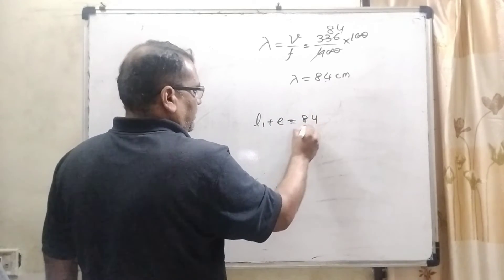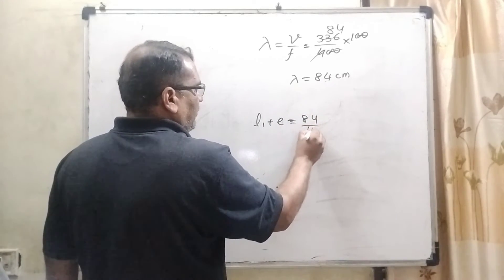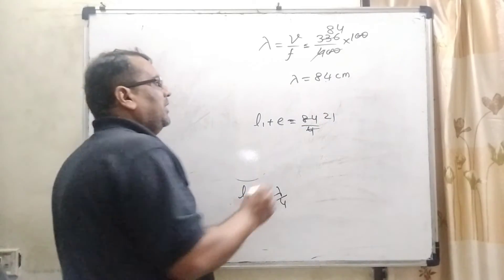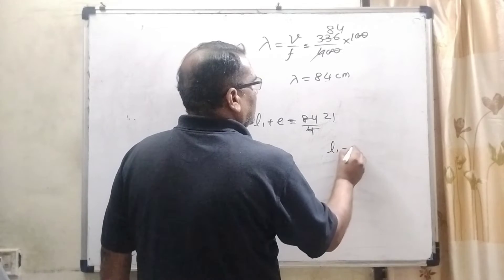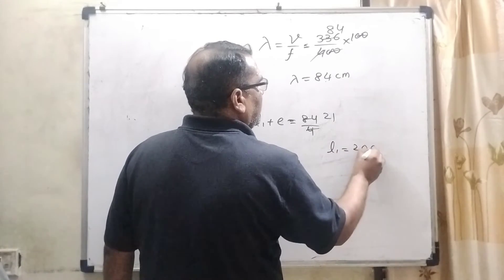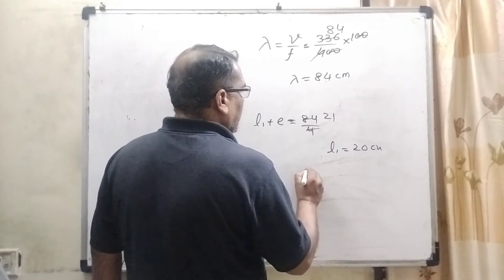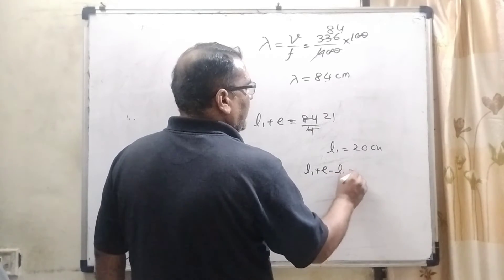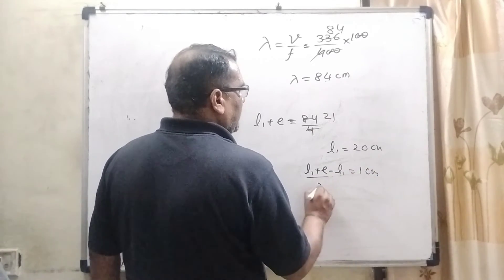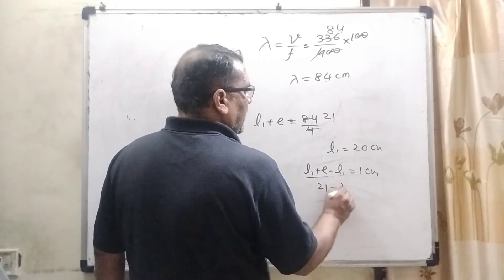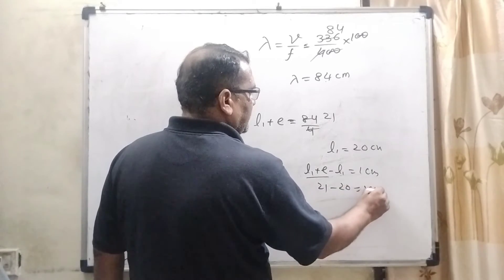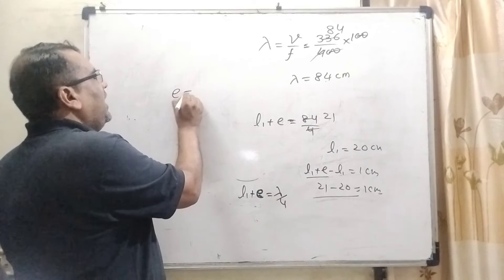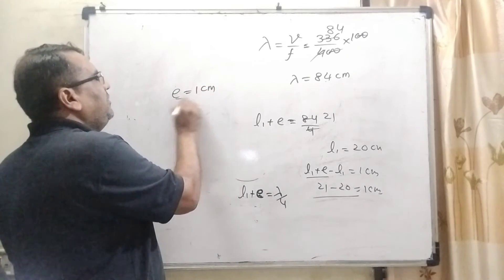Substituting, lambda by 4 equals 84 by 4, which is 21 centimeters. But the question states that the length at first resonance is 20 centimeters. So the end correction E equals L1 + E minus L1, which gives 21 minus 20 equals 1 centimeter. So the end correction E is 1 centimeter.